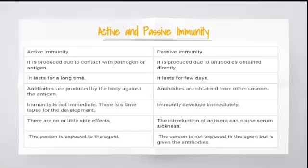The next is: active and passive immunity. Active immunity is produced due to contact with the pathogen or antigen whereas passive immunity is produced due to antibodies obtained directly. Active immunity lasts for a longer time whereas passive immunity lasts for only a few days.